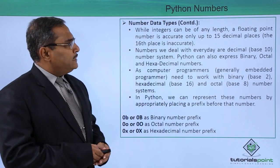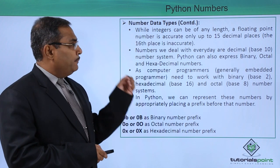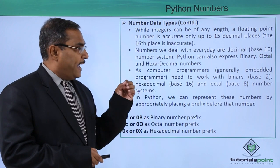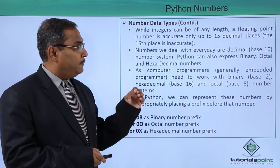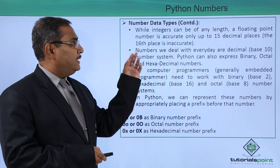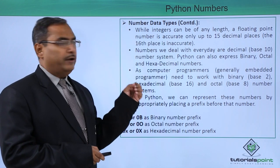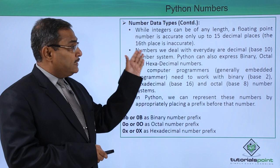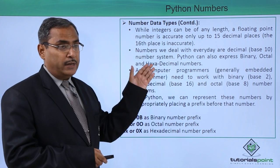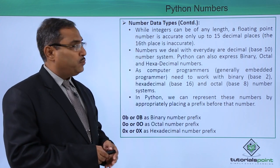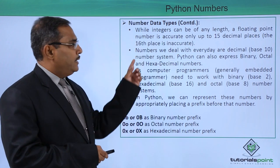While integers can be of any length, a floating point number is accurate only up to 15 decimal places — the 16th decimal place will be incorrect. That is the precision we have for floating point numbers, but in case of integers, they can be of any length.